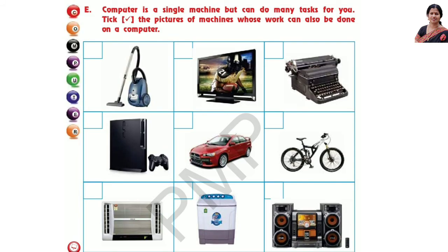A computer is a single machine but can do many tasks for you. Take the pictures of machines whose work can also be done on a computer: TV, typewriter, games, and music system. All this work a computer can do.